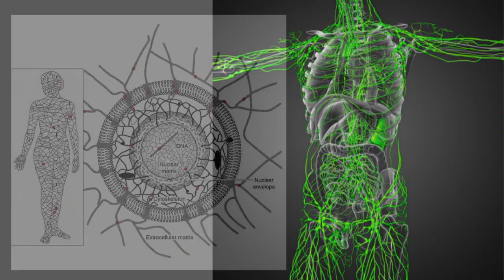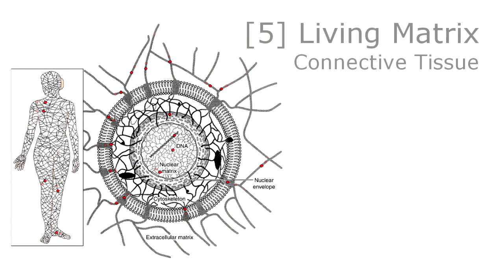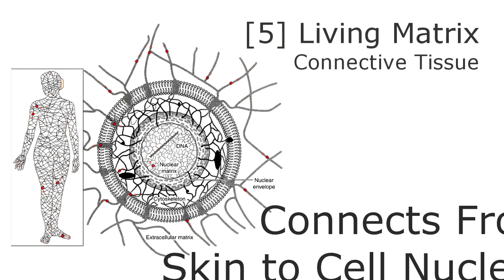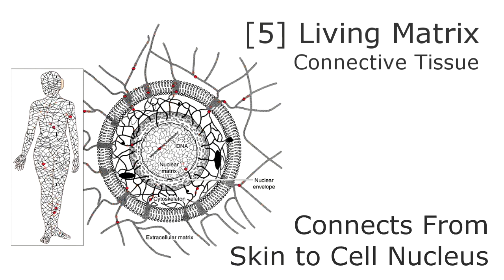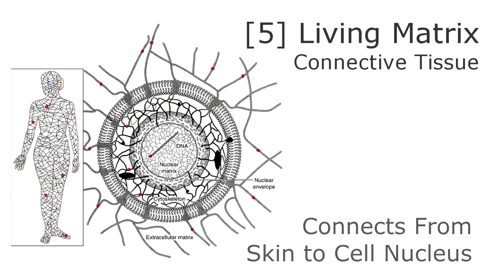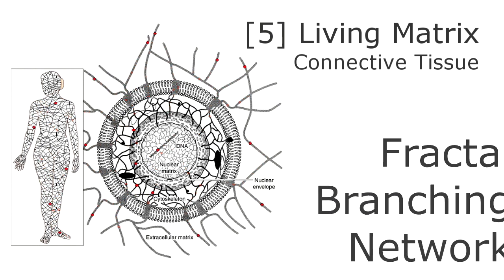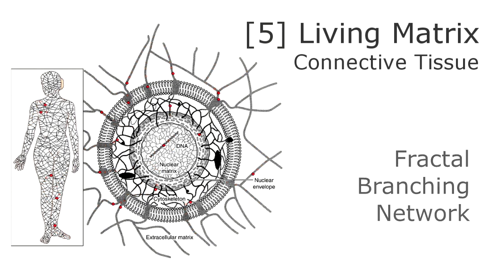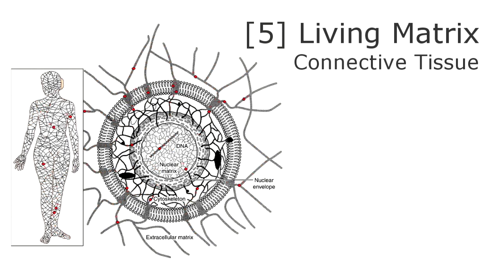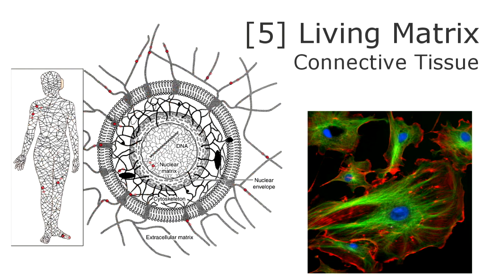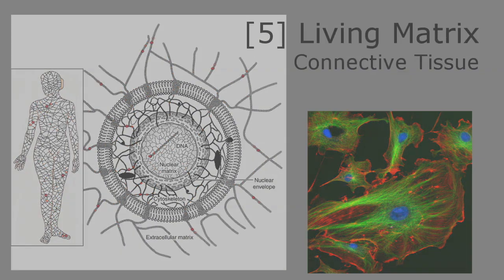The fifth is the living matrix — the connective tissue matrix. As I've shown before, this connects you from your skin to the very nucleus of every cell. Your connective tissue is a fractal branching network that branches all the way down into the nucleus of each cell. It doesn't just stop at the cells like the circulatory system does — it keeps branching all the way down to the nucleus.